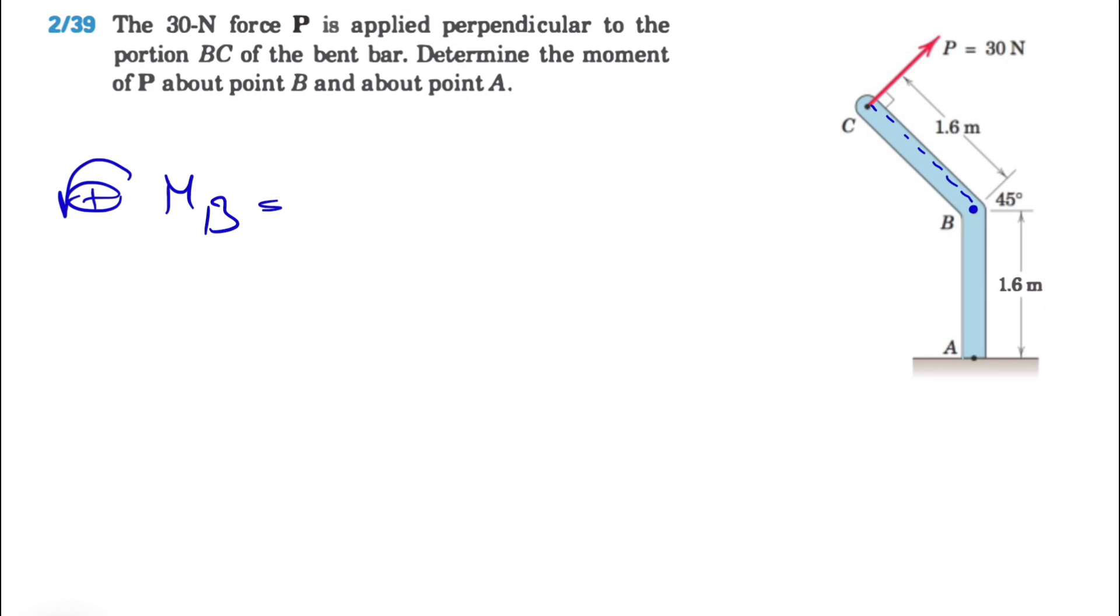So basically we have force times the distance, which is 1.6, and as we can see, the moment is clockwise, so we have a negative sign in here. We know this force P is 30 newtons, so basically 30 times 1.6, and that's going to give us minus 48 newton meters. The negative sign shows that the moment is clockwise, and that's the moment about point B.